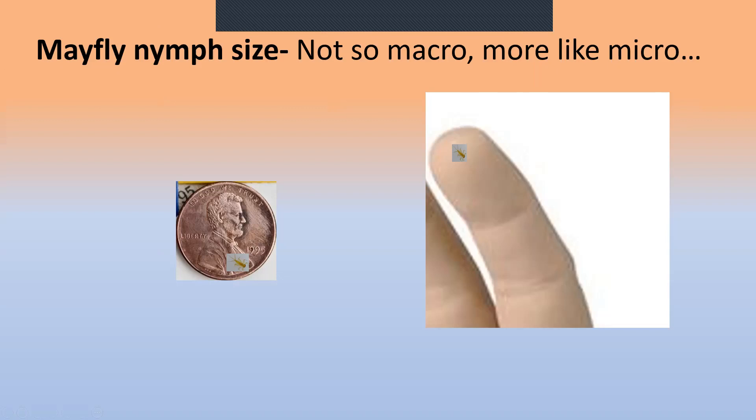Here's an actual size comparison — this is a mayfly nymph shown on the end of a finger or on a penny. They are so tiny that they are not really macro except compared to plankton; they are really more like micro. A lot of times it is hard to differentiate species even with a magnifying glass. Sometimes you have to put them in a little water in a magnifier box — which has a magnifier on the lid — and then look through a magnifying glass to really differentiate the species.